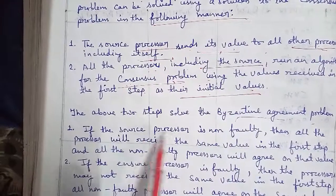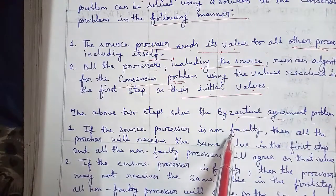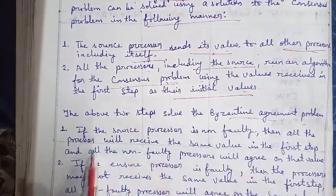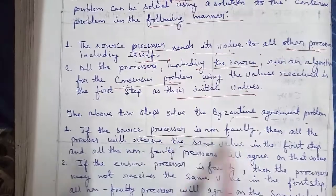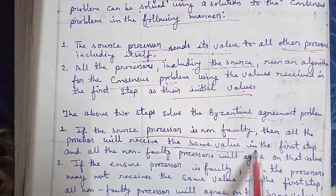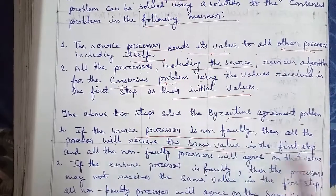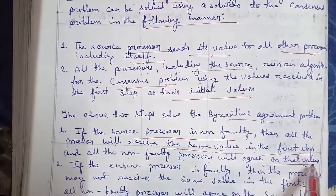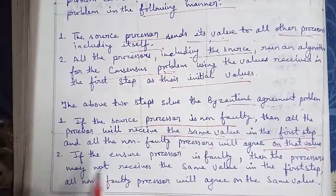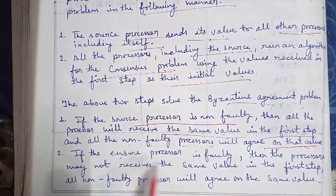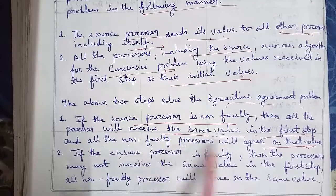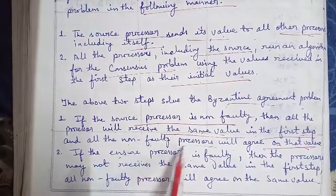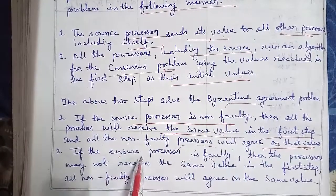First, if the source processor is non-faulty, then all the processors will agree on that same value. In the first step, if the source processor is non-faulty, it will send the same value to all processors, and all non-faulty processes will agree on that value.